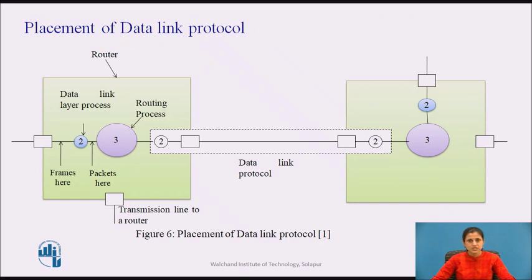Figure 6 shows the placement of the data link layer protocol. Consider an example: a WAN subnet consisting of routers connected by point-to-point leased telephone lines. When a frame arrives at a router, the hardware verifies the checksum and passes the frame to the data link layer software. The data link layer software checks to see if this is an expected frame, and if so, gives the packet contained in the payload field to the routing software. The routing software chooses the appropriate outgoing line and passes the packet back down to the data link layer software, which transmits it.